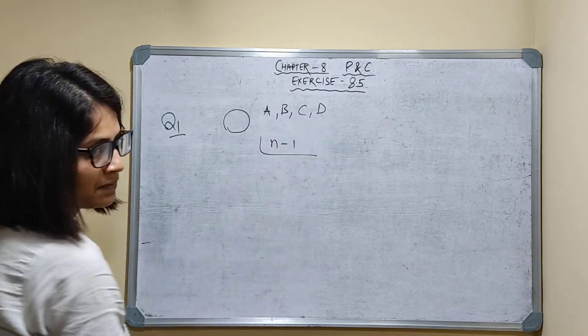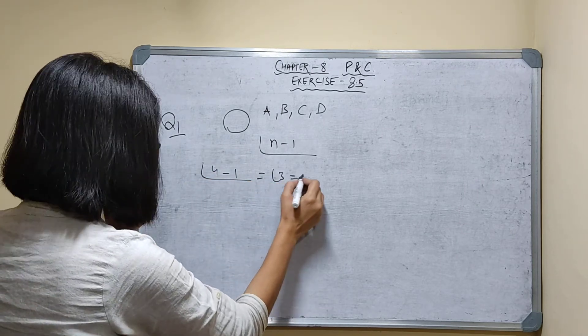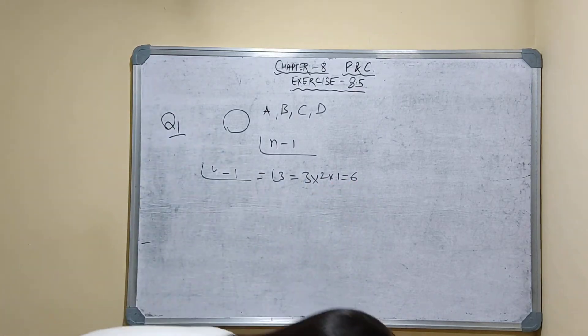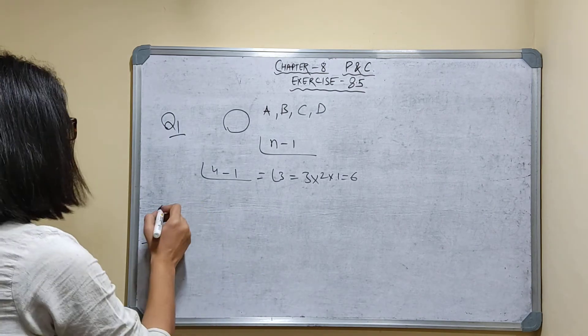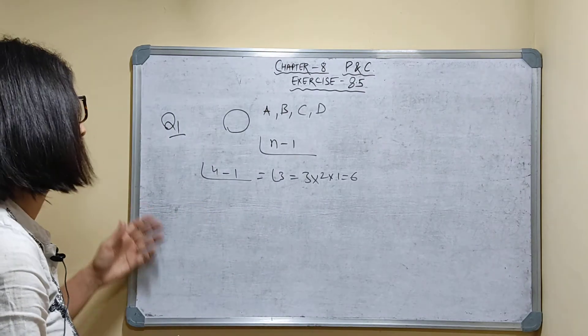So how many are there? A, B, C, D - that's 4. So factorial of 4 minus 1, factorial of 3. That is 3 into 2 into 1, which equals 6 ways. Is it clear? Okay, thank you.